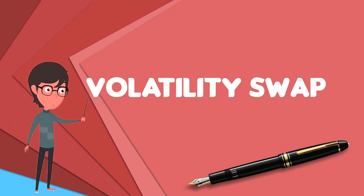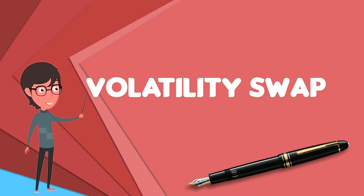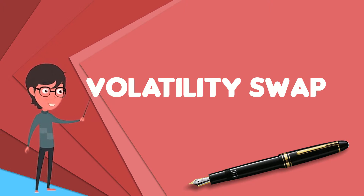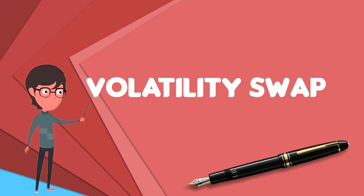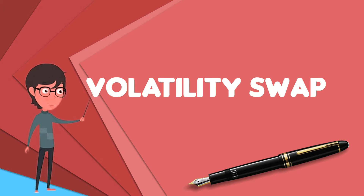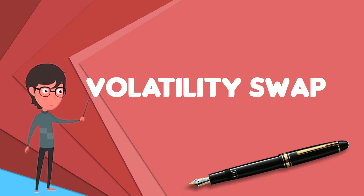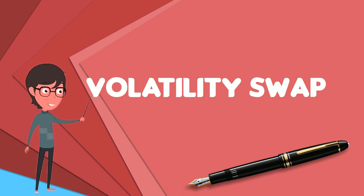In finance, a volatility swap is a forward contract on the future realized volatility of a given underlying asset. Volatility swaps allow investors to trade the volatility of an asset directly, much as they would trade a price index.